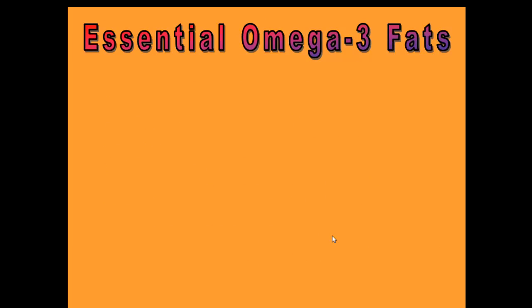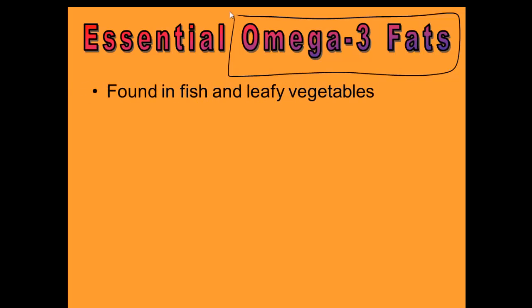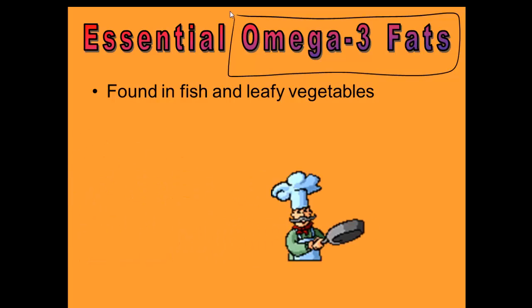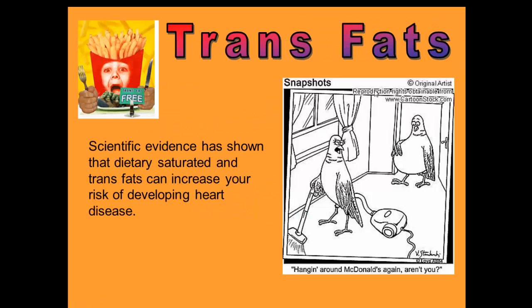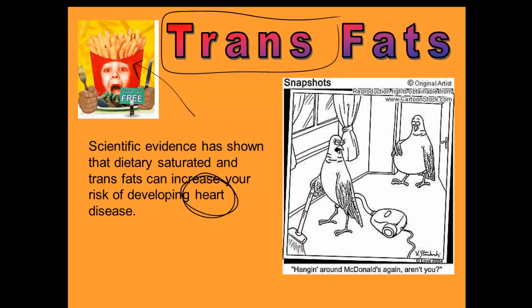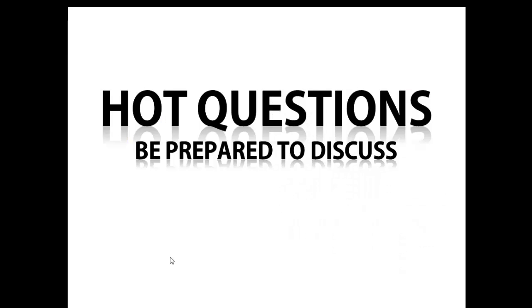There are a couple of fats you've probably been hearing about in the news. One of them is a good fat — omega-3 fats. You find omega-3 fats in fish like salmon and also in green leafy vegetables like spinach and kale. Omega-3 fats are good for you — they help with brain function and may help prevent cancer. Eat the fish, eat the leafy greens. There's also a bad fat that's been in the news — trans fats, found in French fries, donuts, and fast food. Science has shown that trans fats really increase your chances of getting heart disease.